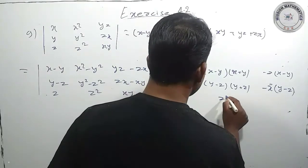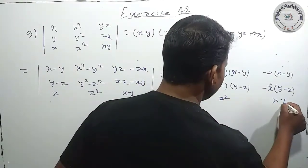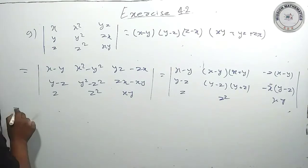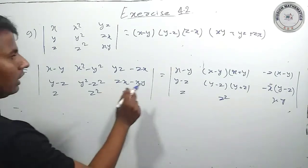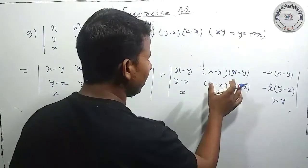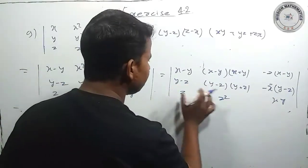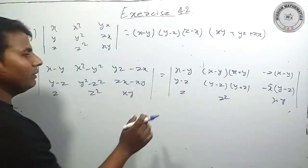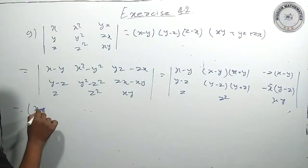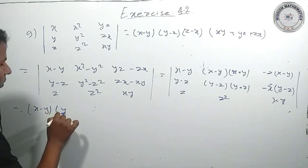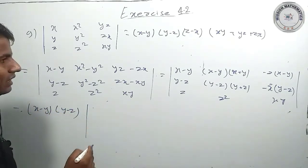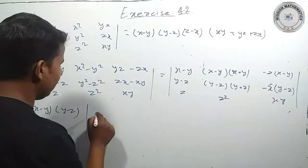z, z² and xy यह हो गया। अब इसमें Row 1 से x minus y common करेंगे और Row 2 से y minus z को common करेंगे। तो यहां से x minus y into y minus z हो गया और फिर simply क्या रह गया: 1, 1,